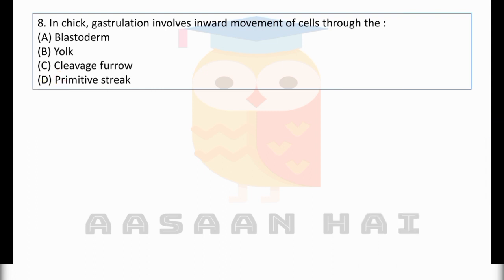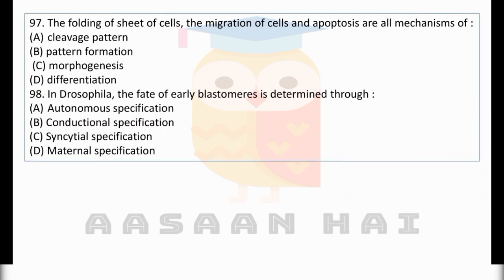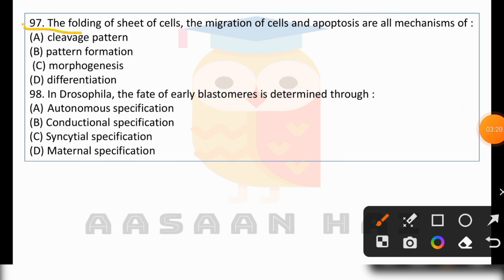Now let's look at the next question: The folding of sheet of cells, the migration of cells and apoptosis are all mechanisms of: (A) Cleavage pattern, (B) Pattern formation, (C) Morphogenesis, or (D) Differentiation.